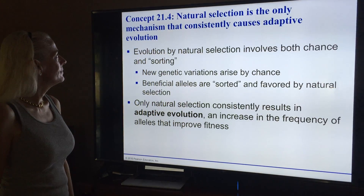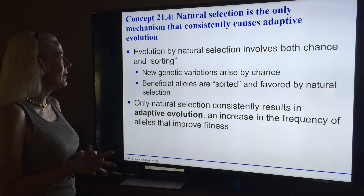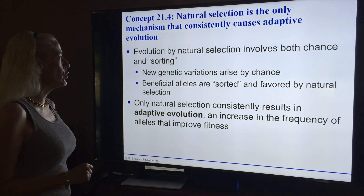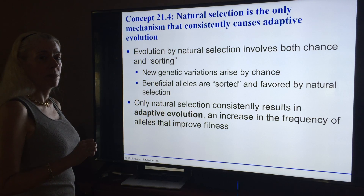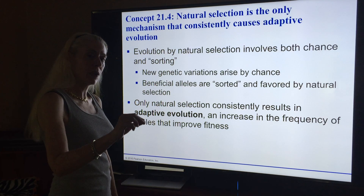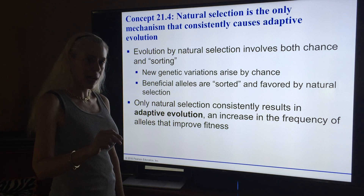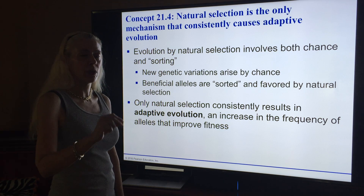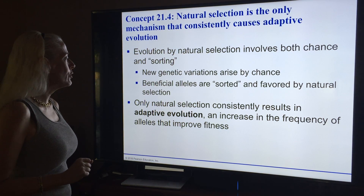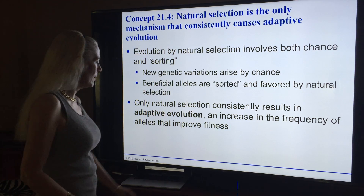Evolution by natural selection involves both chance and sorting. New genetic variations arise by chance. Beneficial alleles are sorted and favored by natural selection. If it's advantageous in the environment you're living in, you will be able to reproduce more because you're healthier. Those genes that allow you to be more reproductively viable in your environment allow your offspring to then have those genes. Only natural selection consistently results in adaptive evolution — an increase in the frequency of alleles that improve fitness.